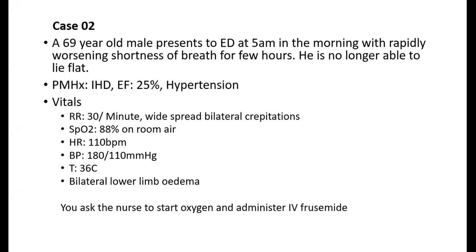Second question: a 69-year-old male presents to the ED at 5am with rapidly worsening shortness of breath for a few hours. He can no longer lie flat. Past medical history: ischemic heart disease with ejection fraction 25%, hypertension. Vitals: respiratory rate 30, widespread bilateral crepitations, hypoxic, tachycardic, hypertensive, afebrile, bilateral lower limb edema. The nurse asks: 'Shall I start oxygen and give frusemide?' Think about your approach.